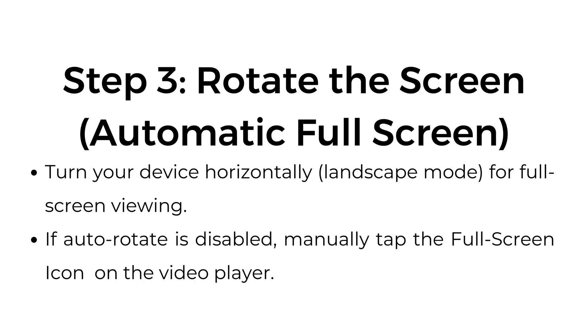Step number three, rotate the screen. Automatic full screen — turn your device horizontally to landscape mode for full screen viewing. If auto rotate is disabled, manually tap the full screen icon on the video player.